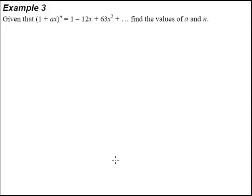Example 3 will be one question whereby you have to know your NCR formula. If you don't know the NCR formula, you can't solve this question. So let's have a look. 1 plus ax raised to the power of n is equal to 1 minus 12x plus 63x squared. Find the values of a and n.